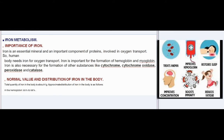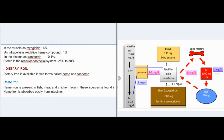Normal value and distribution of iron: total quantity of iron in the body is about 4 g. Approximate distribution: in hemoglobin 65–68%; in muscle as myoglobin 4%; as intracellular oxidative heme compounds 1%; in plasma as transferrin 0.1%; stored in the reticuloendothelial system 25–30%.